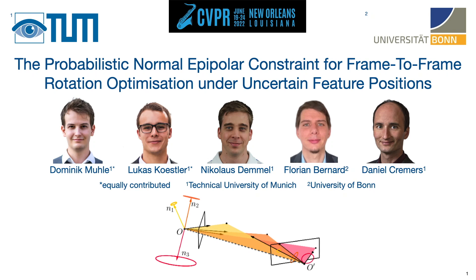This video presents the probabilistic normal epipolar constraint, a novel constraint on the relative pose between two images. The probabilistic normal epipolar constraint, or PNEC, accounts for uncertainty in the position of feature points in the images. For the first time, it allows uncertainty information to be incorporated into the normal epipolar constraint to achieve more accurate pose estimation.